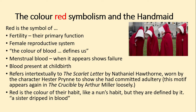The colour red is the symbol of fertility. The handmaid's primary function is to reproduce, and of course of the female reproductive system. Offred actually says 'the colour of blood defines us' — they are identified with this idea of their feminine body. The menstrual blood signifies their fertility, that they're still fertile. The irony is that menstrual blood also appears when it shows failure, because when a woman menstruates it's a sign she's not pregnant. So there is a contradiction in the hope displayed by menstrual blood but also the failure when it appears.